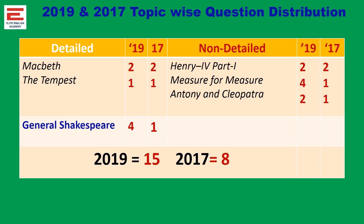This is the overall map of the last two years unit-wise question distribution. In 2019, it is something unbelievable — 15 questions are asked from this unit alone. Whereas in 2017, 8 questions are asked. In detail, from Macbeth and Tempest, both years, two from Macbeth and Tempest, one each. And from General Shakespeare, though it is just an introduction to Shakespeare, 4 questions were asked in 2019, whereas in 2017, 1 question was asked.